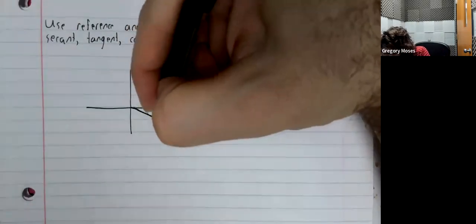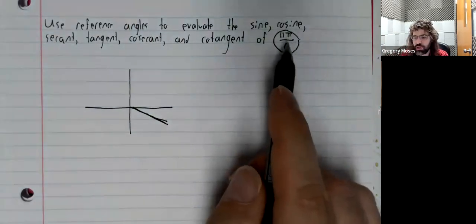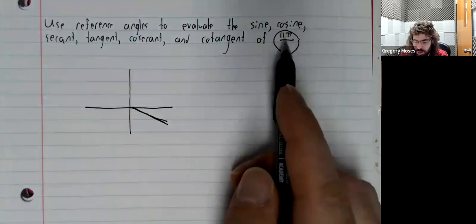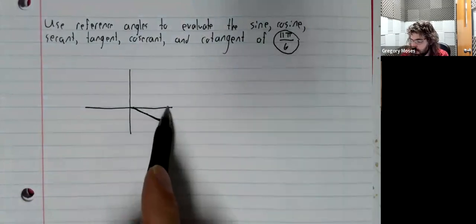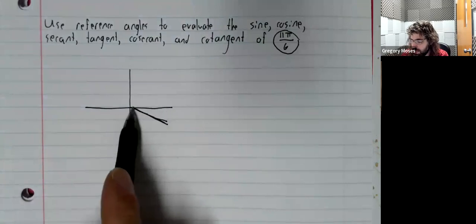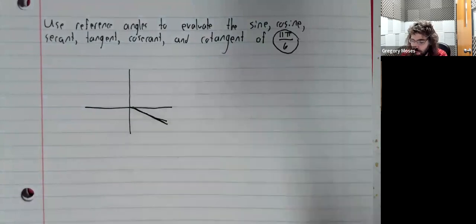The quickest way to see that is just that 11 pi over 6 is close to 12 pi over 6, and 12 pi over 6 is 2 pi. So we're in the fourth quadrant because we're close to 2 pi.